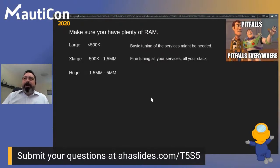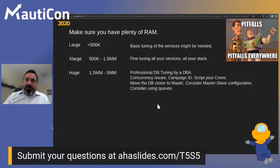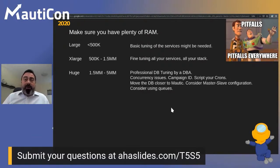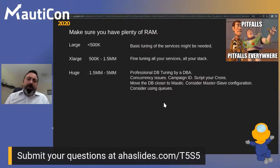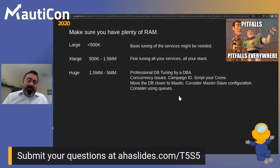When you go way beyond one million contacts, I certainly recommend you start thinking about hiring a professional DBA. You will start finding concurrency issues, which means your cron jobs — basically Symfony commands made for MAUTIC — are going to be running on just one CPU. It doesn't matter if you have 10 contacts or 10 million contacts; all the tasks the project is running will be running on one CPU — one for campaigns, one for segments, etc.